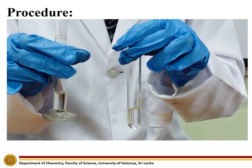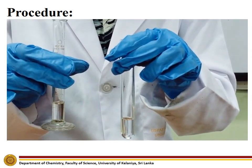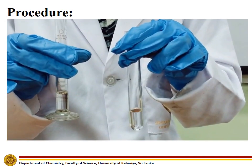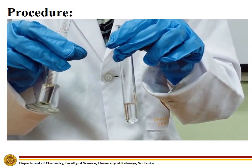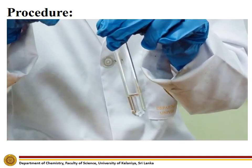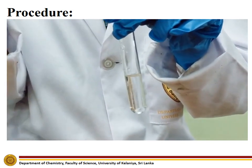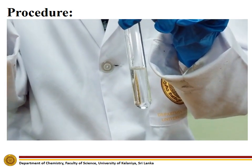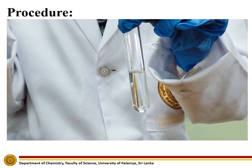To carry out the second experiment, add about 2 ml of sodium hydroxide solution to the test tube containing the carboxylic acid and check whether a clear solution is observed. Here, a clear solution can be observed.